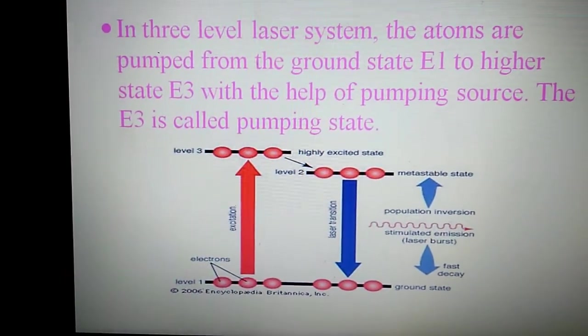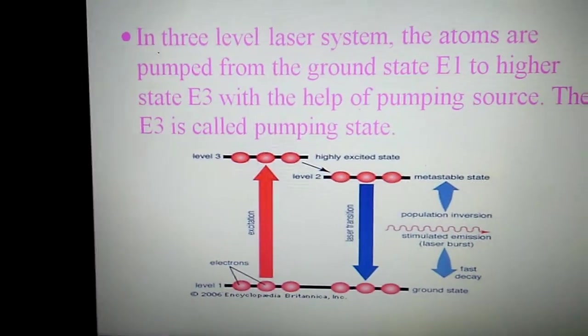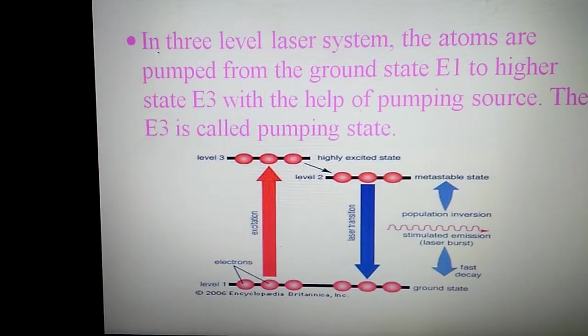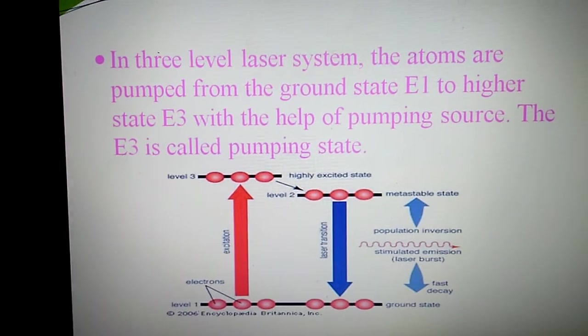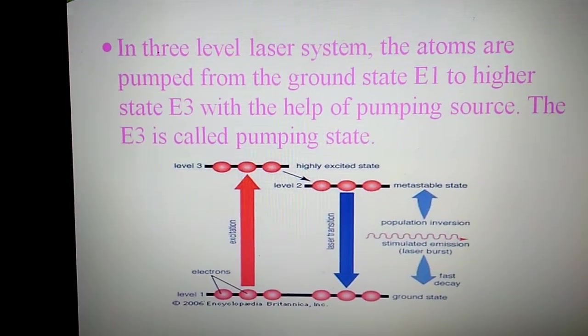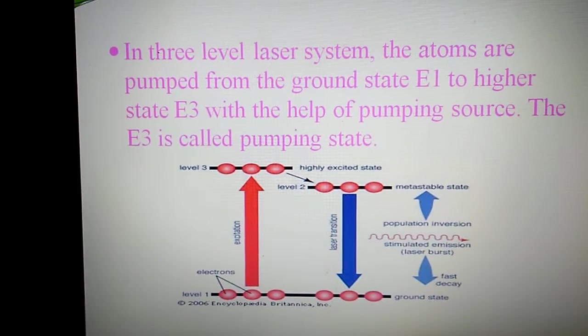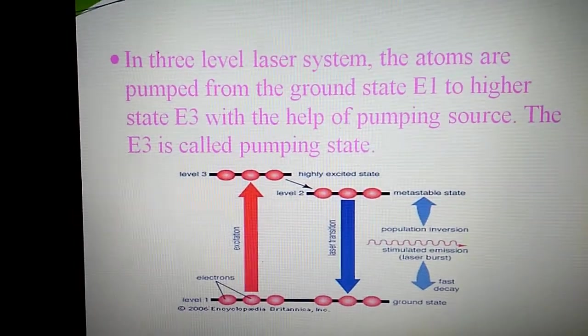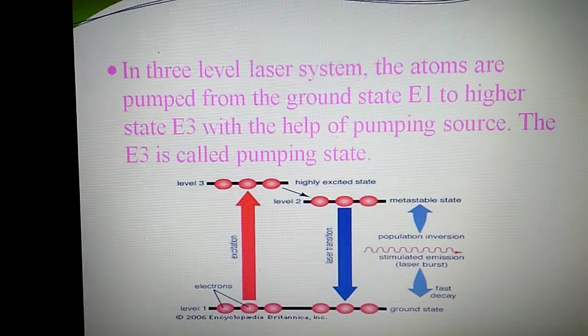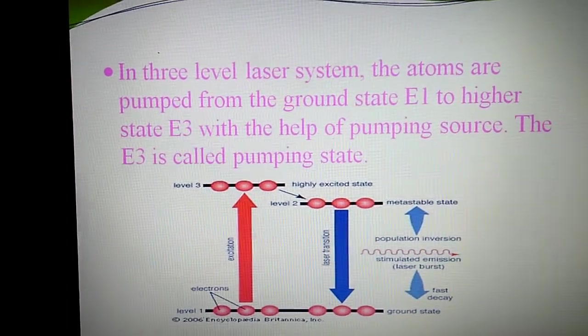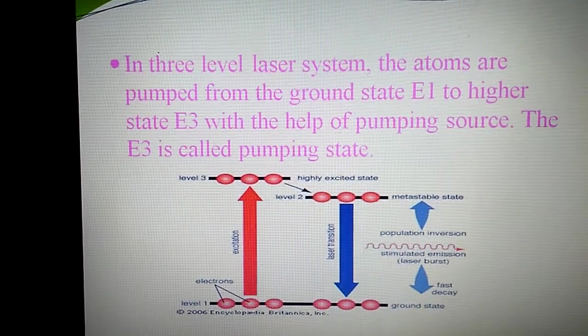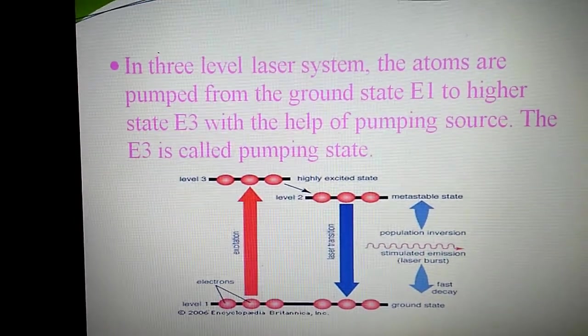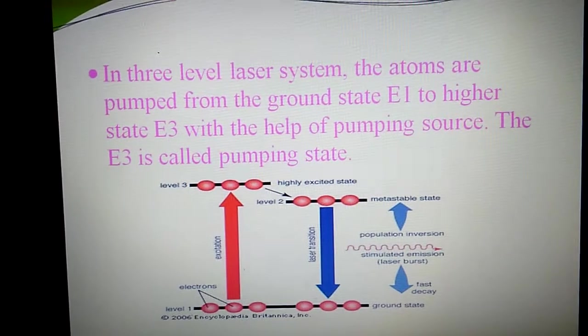pumping is important and for laser, population inversion is very important because without population inversion laser cannot occur. To achieve population inversion we have to supply huge amount of energy to atoms present in ground state, called pumping. There are two methods of pumping scheme: three level pumping and four level pumping. So today I am going to discuss about the three level and four level pumping.